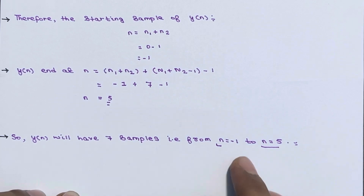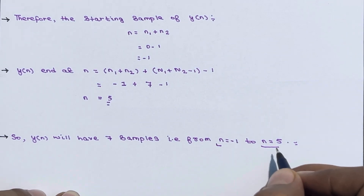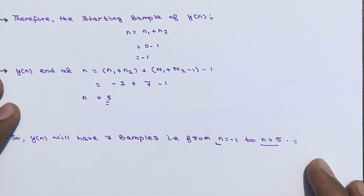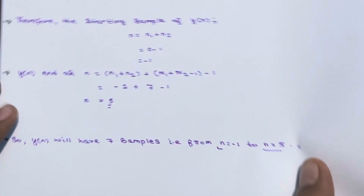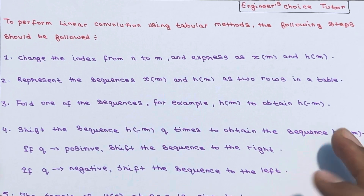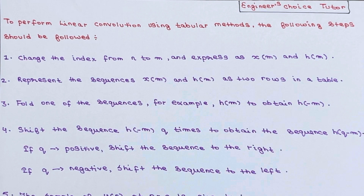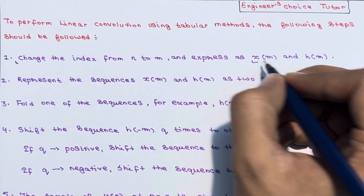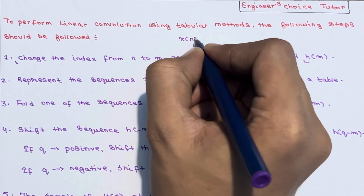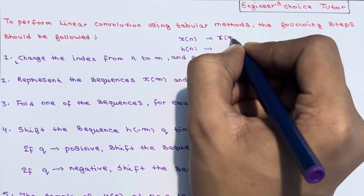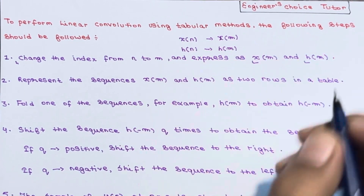Knowing the starting and ending points is helpful when computing the result — you know exactly where to check. Now let's understand the steps involved in the tabular method. The first step is to change the index from n to m and express the sequences as x[m] and h[m].